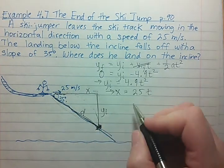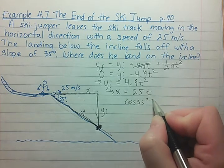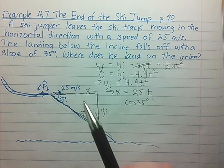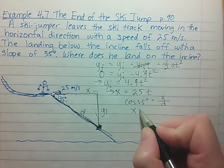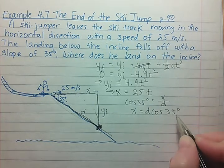We have an angle here. If we take the cosine of that angle we end up with adjacent over hypotenuse. Our adjacent is x, our hypotenuse is d. So we end up with x equals d times the cosine of 35 degrees.